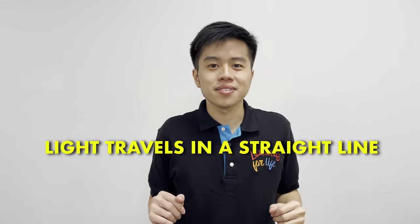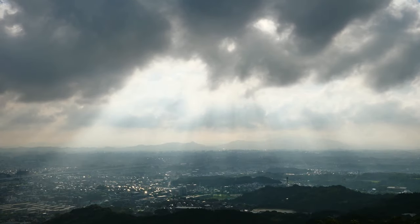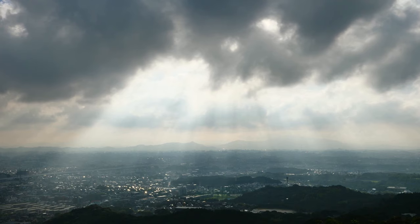One important property of light is that it travels in a straight line. It's hard to see this in real life because light constantly surrounds us. But sometimes, particularly on a misty morning, you can see beams of light cut through the air. These beams of light always travel in a straight line and they're called light rays.